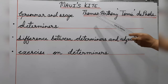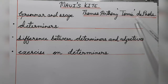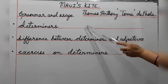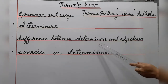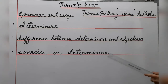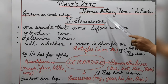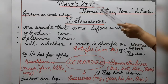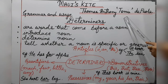Hello children, welcome back. We are doing grammar and usage of the chapter Maui's Kite by Thomas Anthony Tommy DePaola. In this video I will explain determiners, the difference between determiners and adjectives, and then we will do an exercise based on determiners.